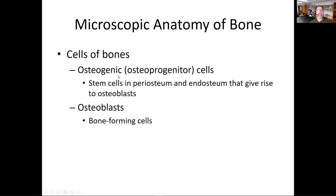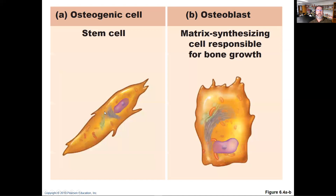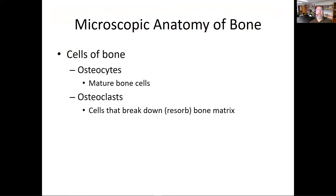The microscopic anatomy of bone involves four cell types: osteogenic or osteoprogenitor cells, which are stem cells in the periosteum and endosteum that give rise to osteoblasts; osteoblasts, the bone-forming cells; osteocytes, which are mature bone cells that become part of the bone makeup over time; and osteoclasts, which break down bone through a process called resorption.